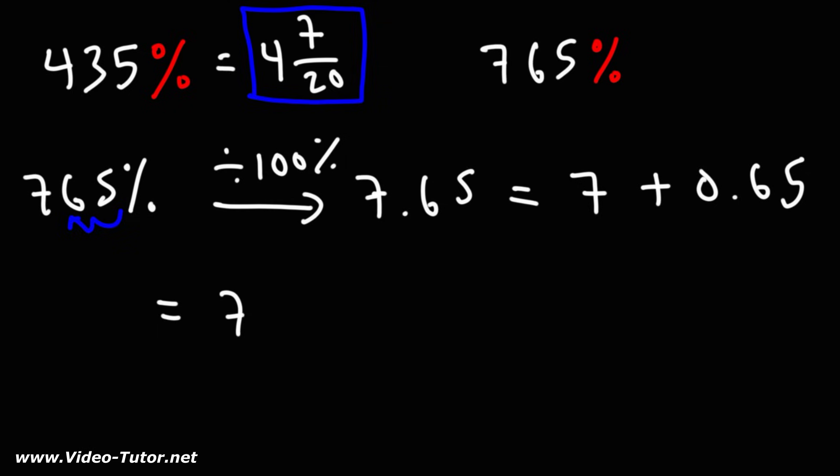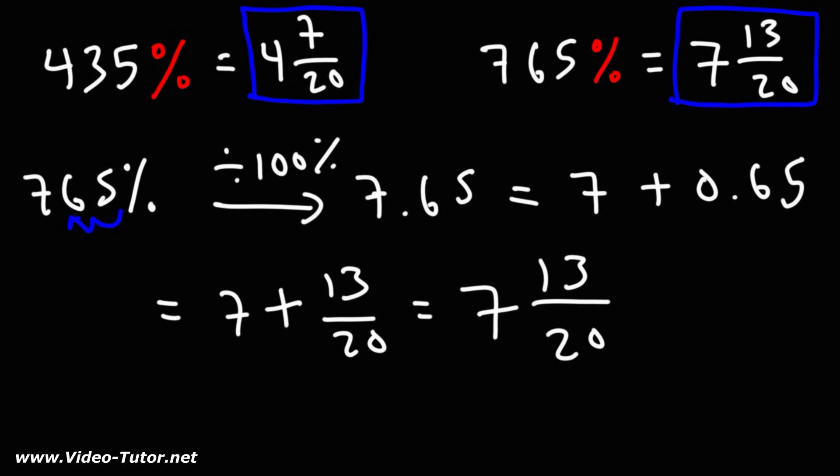So we can replace 0.65 with 13 over 20. And we can write that as a mixed number. So our answer is going to be 7 and 13 over 20. So now you know how to convert a percentage into a mixed number.